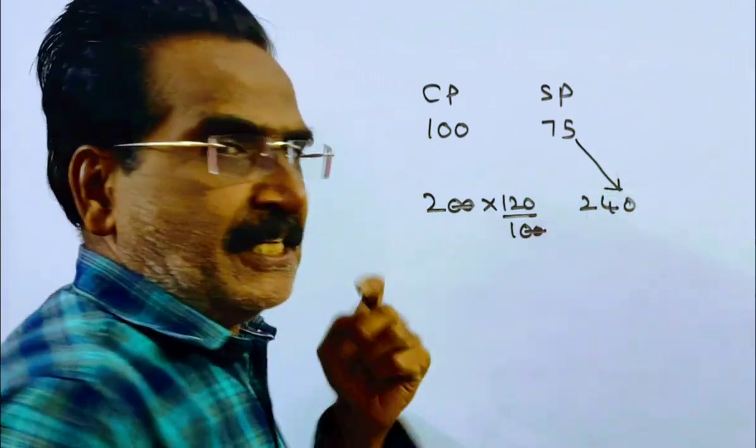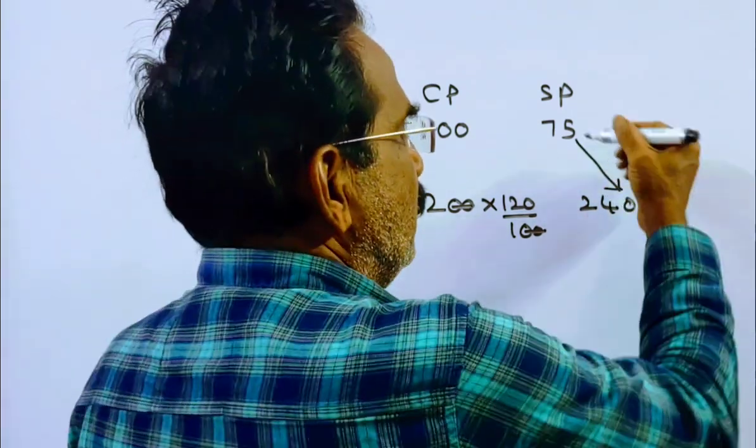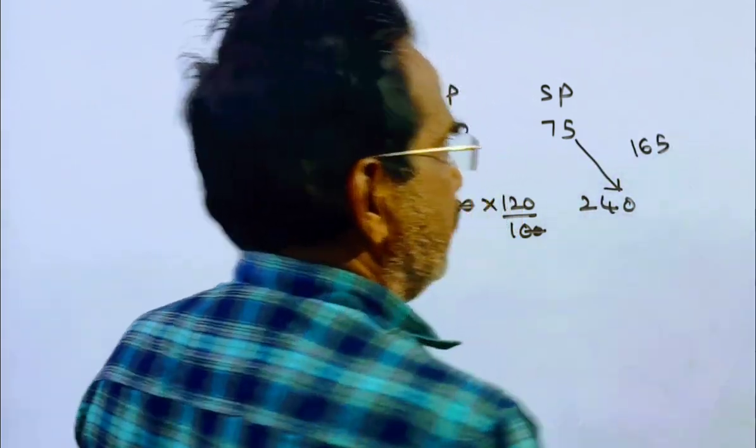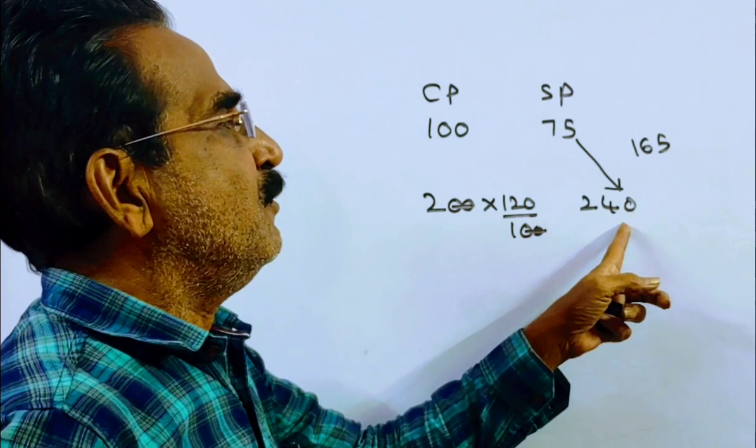So friends, the difference between these two selling prices. So this is increased by 165 rupees. 165 plus 75 equals 240.